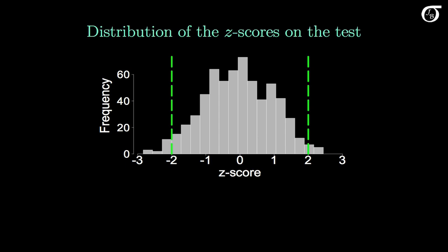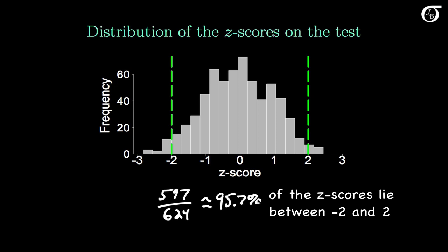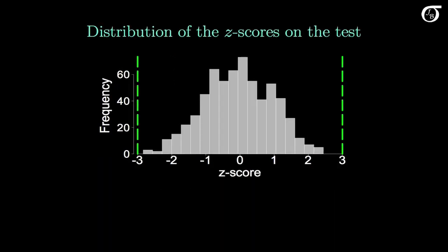If we counted up the z-scores between minus 2 and 2, we'd see that 597 of the 624 values — approximately 95.7% — lie between minus 2 and 2, which is pretty close to the 95% the empirical rule states. And looking at 3 standard deviations, all of the z-scores for this data set lie between minus 3 and 3. That won't always be the case, but we're not going to have more than a small proportion of z-scores outside of minus 3 to 3.